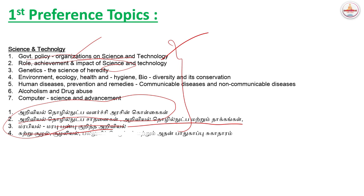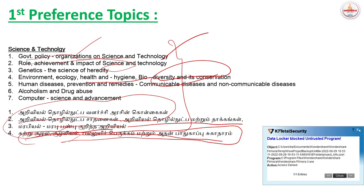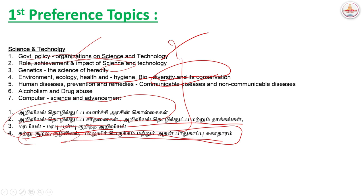Next is Environment, Ecology, Health and Hygiene, Biodiversity and Conservation. This is the topic we are going to talk about. At present, there are great updates and agreements because this is the future and there are great problems. In the science and technology topic, it will be 50% of its content — 50% is current issues.